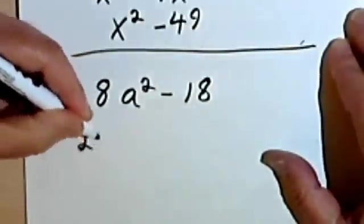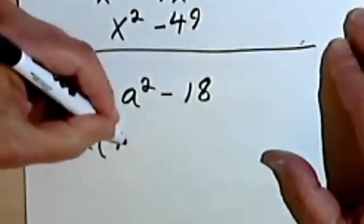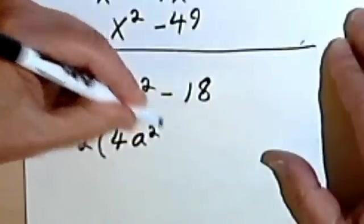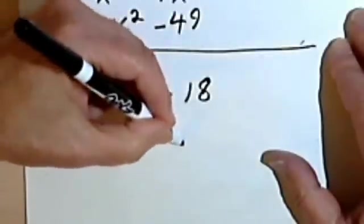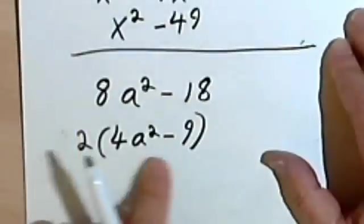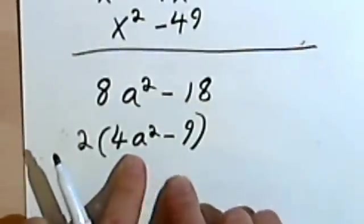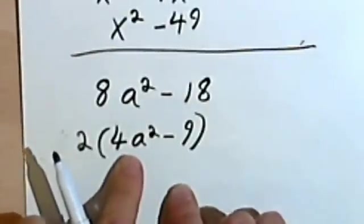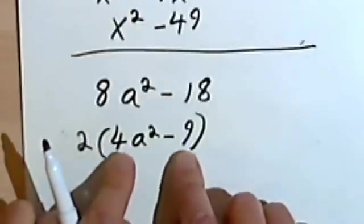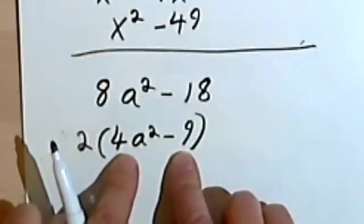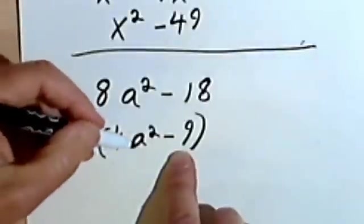Dividing the 8 by 2, I'm going to get a 4. So that'll be 4a squared minus...dividing the 18 by 2, I'll get a 9. So now looking at what I have inside parentheses, this is 4a squared, which is a perfect square, and 9, which is a perfect square. So this binomial can be factored.